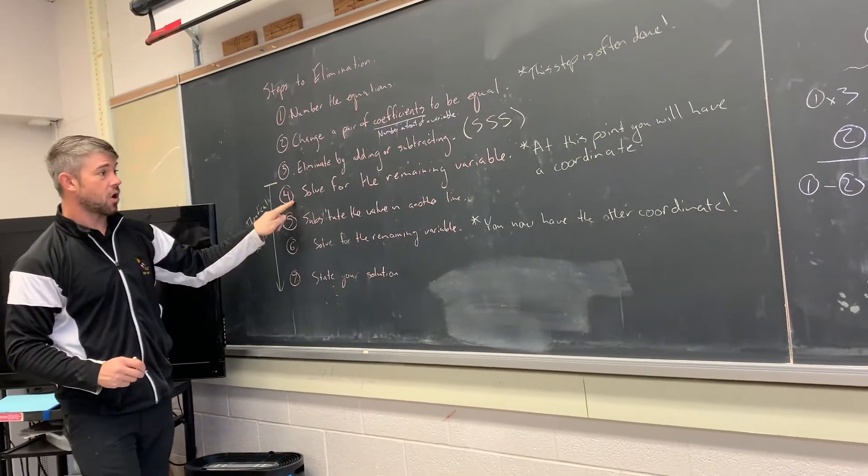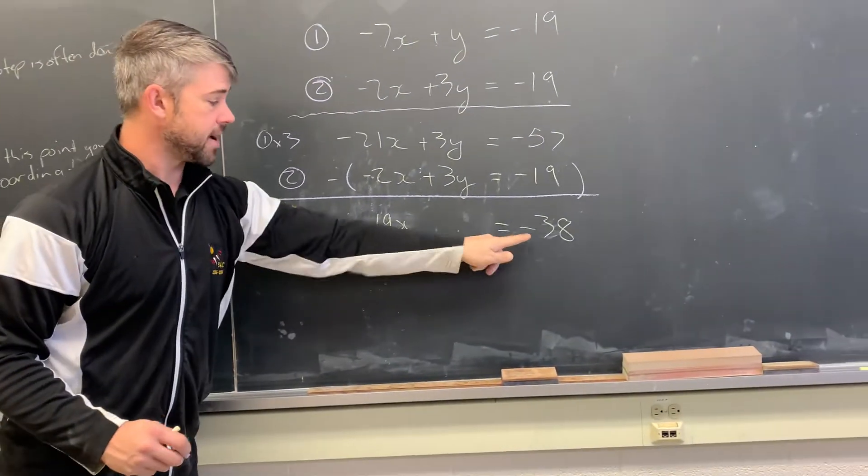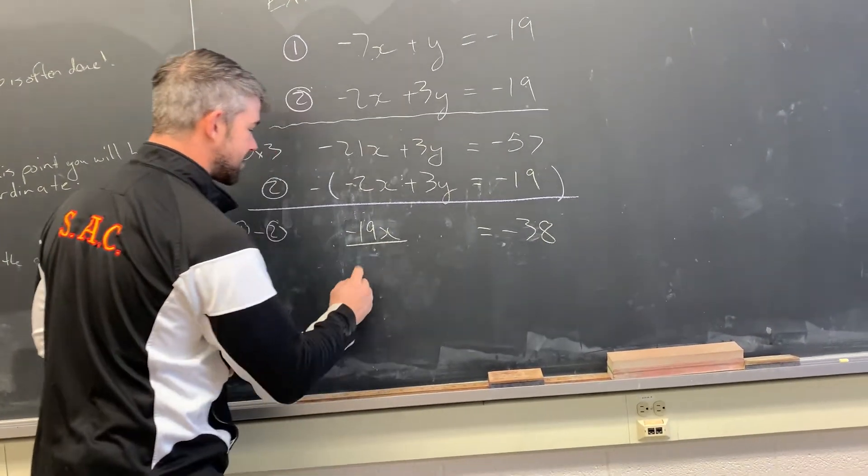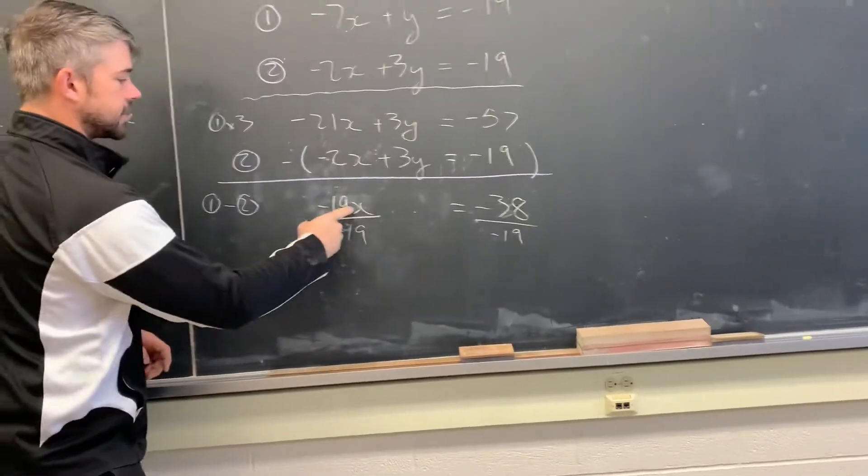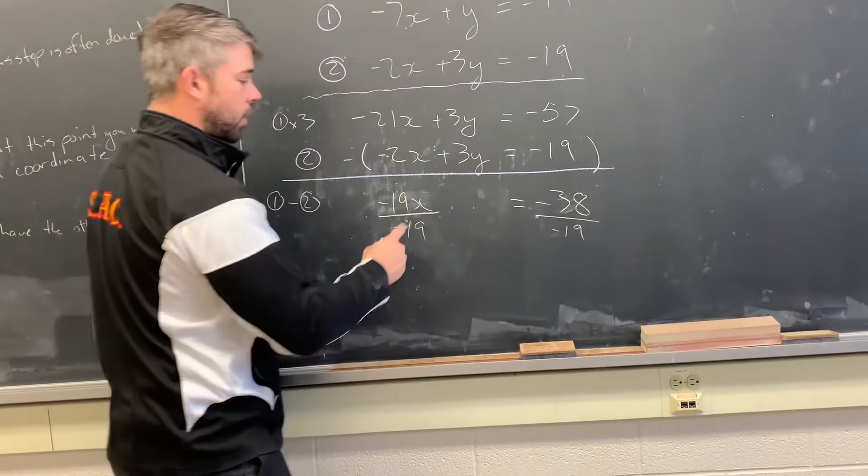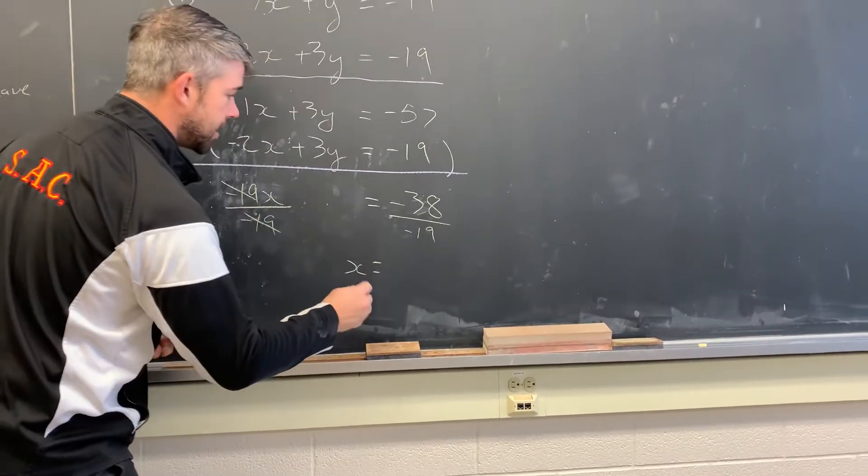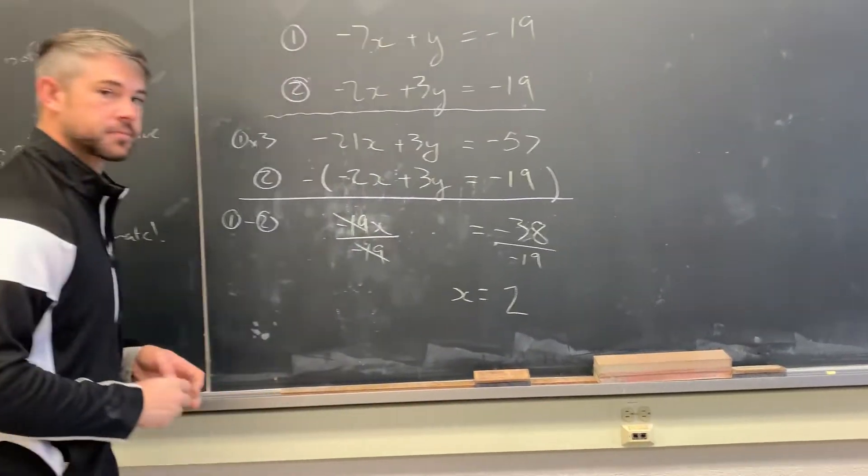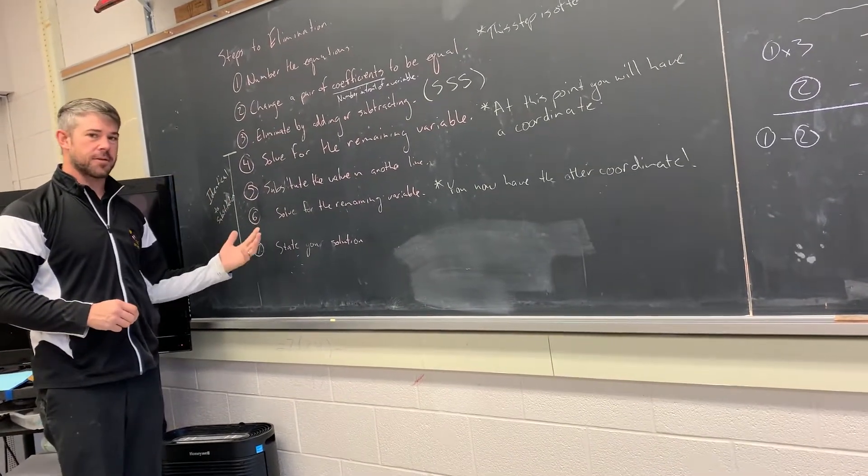And we've eliminated a variable. The next step, step four, says solve for the remaining variable. So if we take a look at our work, there's only one variable remaining. We have an equation. Negative 19x equals negative 38. To solve, I'm going to eliminate this negative 19. I'll undo that operation by using the opposite operation. And since negative 19 was multiplied by x, I'll divide by negative 19 to eliminate it. And what I do to one side, I have to do to the other. So those will cancel. And I'll be left with just x on the left-hand side. And negative 38 divided by negative 19 is positive 2.